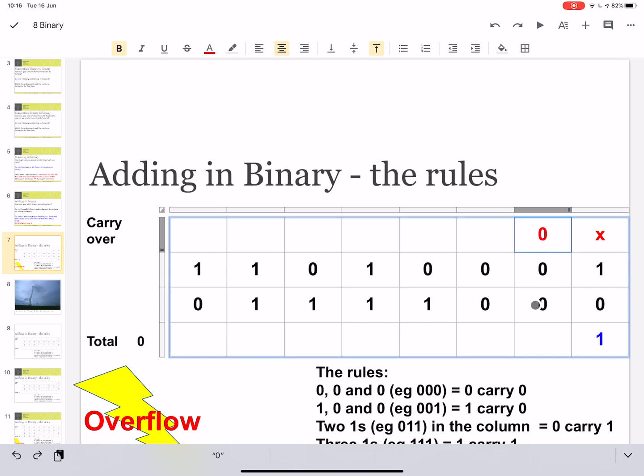So now we've got 3 0s. So you can see here, 3 0s, we put 0 and we carry 0. Same thing, all right? 3 0s, so 0 carry 0.